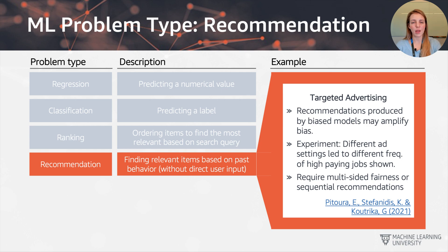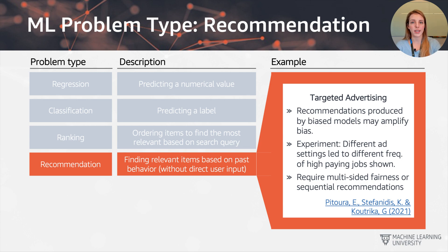The next example is recommendation, which is all about finding relevant items based on past behaviour without direct user input or any search query. Everything that we do online — every like, every dislike on different platforms, even the clickstream, the patterns, how long we spend on different sites — all of that can be used to make recommendations of different products, services, or even the ads we see, which are influenced by our online behaviour.